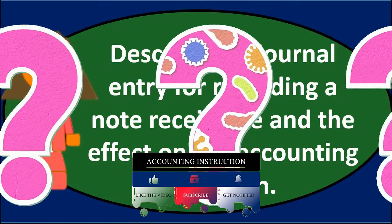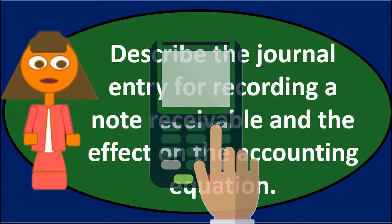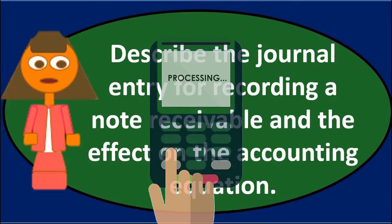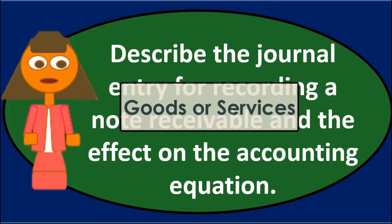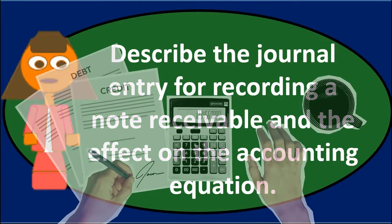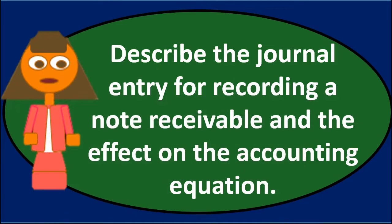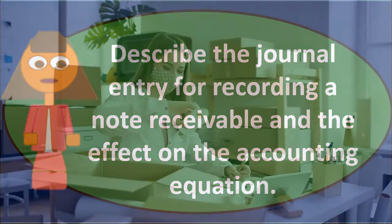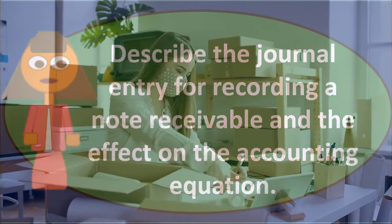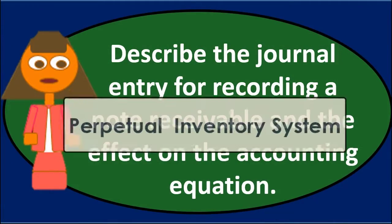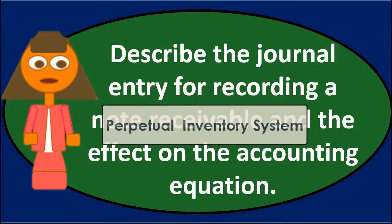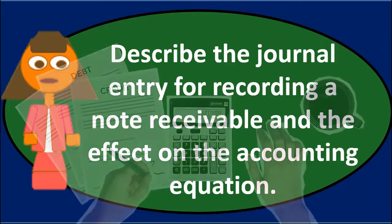An accounts receivable is the default standard — something owed to us due to a prior transaction, typically a sale of goods or services. The journal entry would be a debit to accounts receivable and a credit to revenue, income, sales, or fees earned. If we sell inventory, we would also debit cost of goods sold and credit inventory — that applies under a perpetual inventory system.